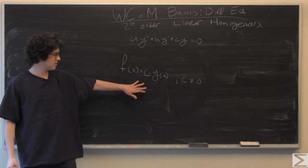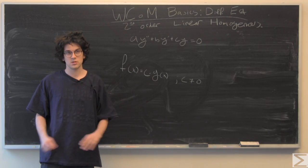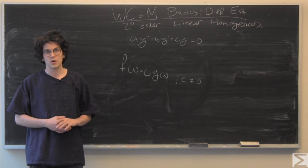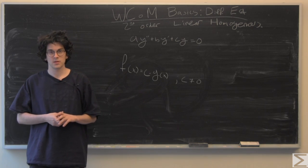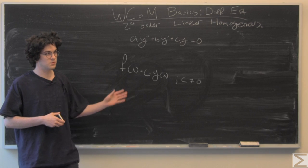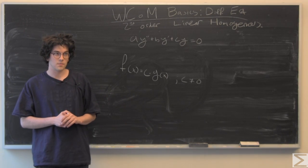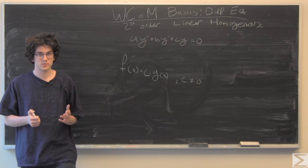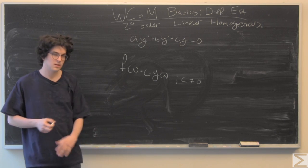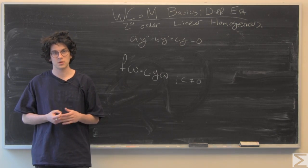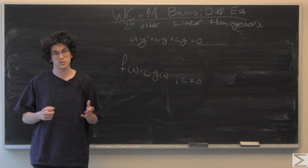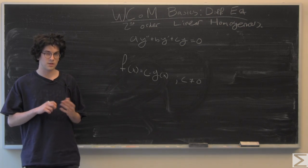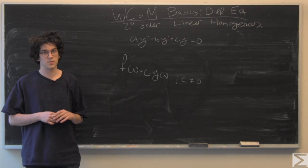This relationship should be familiar if you've been exposed to linear algebra. If so, you've done this with vectors in Rn. This is the same thing. However, we have another tool when dealing with functions called the Wronskian matrix to determine if two functions are linearly dependent or independent.